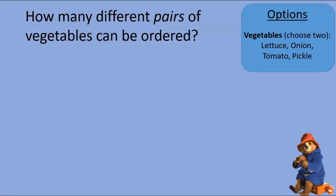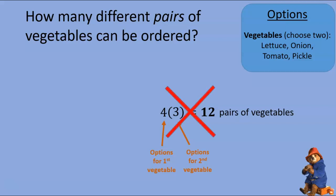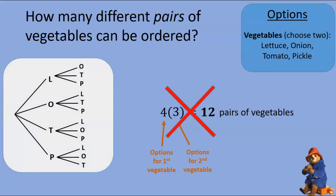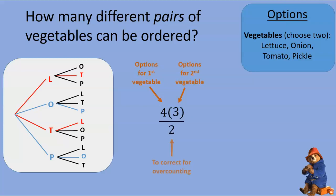At first glance this seems easy — four options for the first vegetable, three for the second, giving 12 pairs. Wrong. Looking at our counting tree, there are 12 paths, but they don't all lead to different vegetable pairs. For example, one path gives you lettuce and tomato, while another gives tomato and lettuce — it's the same pair. Every pair appears twice on the counting tree. Onion and pickle, and pickle and onion, are the same pair. We counted every vegetable pair twice, so we should divide by two to correct for the over-counting.